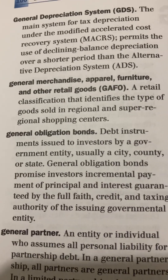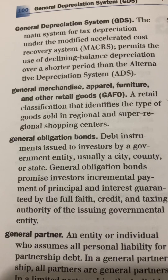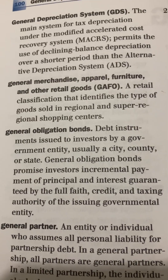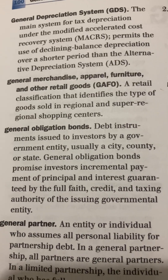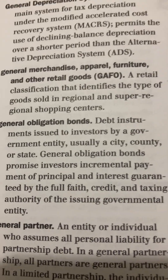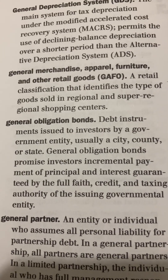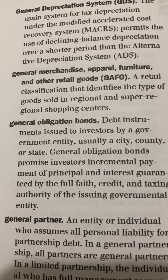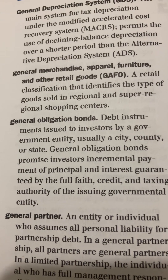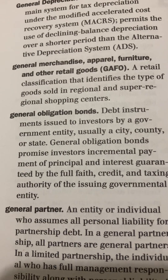General Merchandise, Apparel, Furniture, and Other Retail Goods — the acronym is GAFO. A retail classification that identifies the type of goods sold in regional and super regional shopping centers.